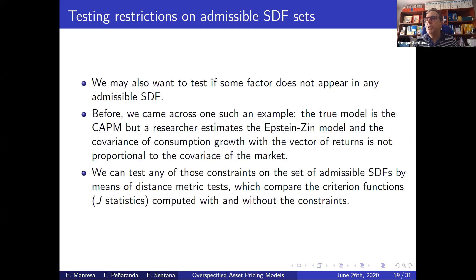We can use very simple distance metric tests. We prefer these over Wald tests because distance metric tests are like likelihood ratio tests — they compare the difference in criterion functions and are invariant to normalizations, while Wald tests won't be invariant even in these linear models if you change the normalization restrictions.